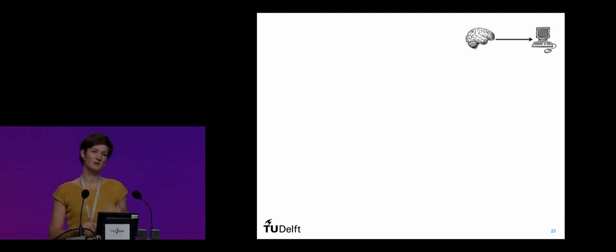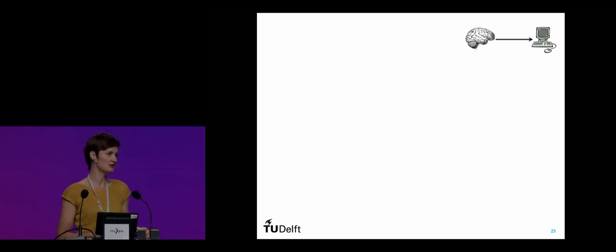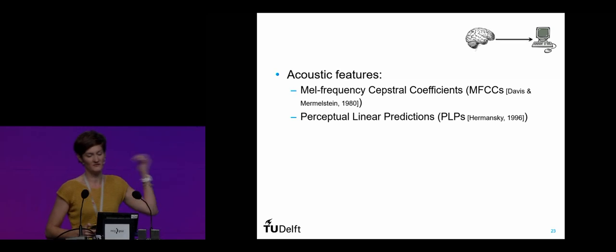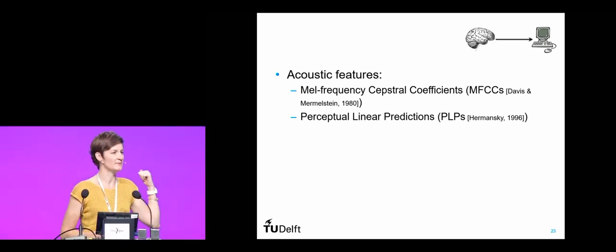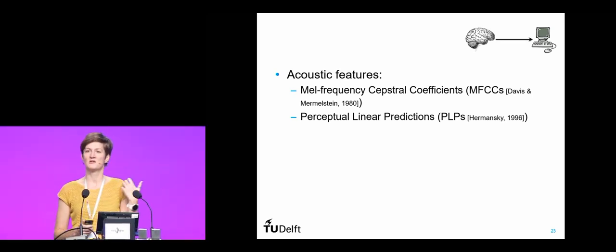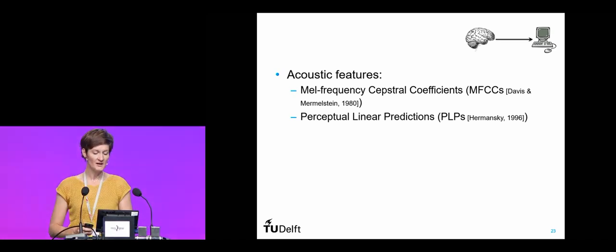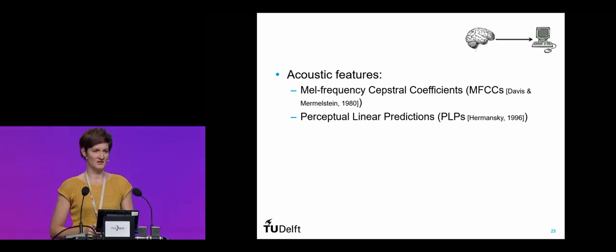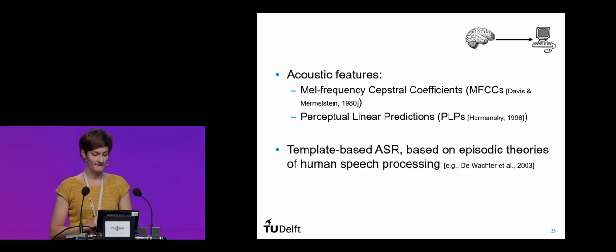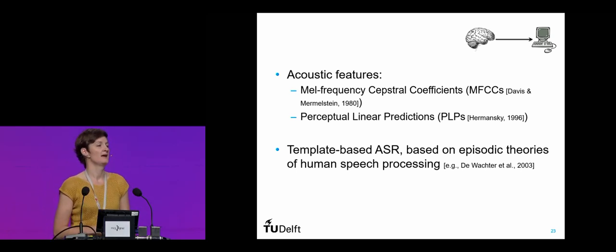I also used automatic speech recognition to build a computational model of human speech processing, trying to figure out the role of durational cues in the disambiguation of speech. You can also go the other way: using information about how humans perceive speech to improve ASR. MFCCs and PLPs are based on human hearing — information about the important characteristics of the speech signal during human hearing are incorporated into these acoustic features and have been shown to improve recognition performance quite dramatically.